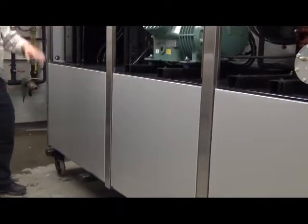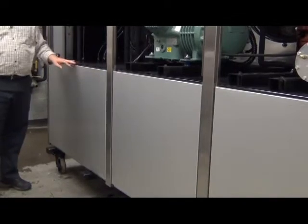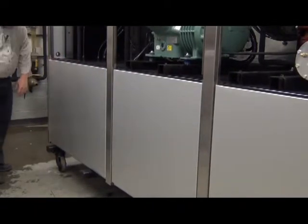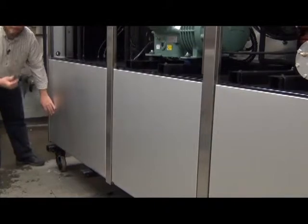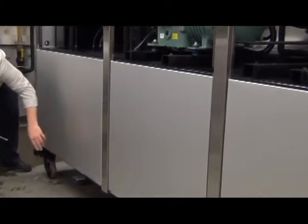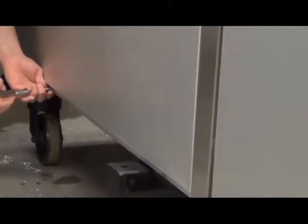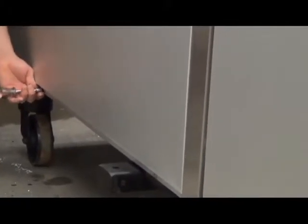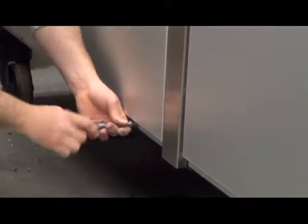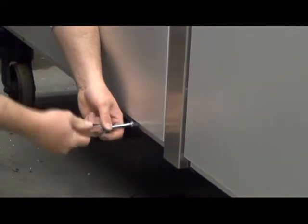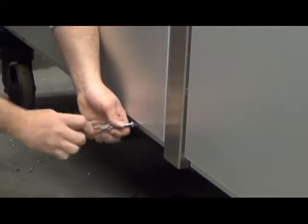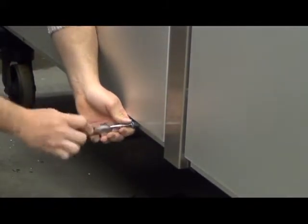Once you have the top panels removed and safely set aside, then you can remove the bottom panels, and you do that by using a 7-16ths nut driver. There are either one or two bolts in each of the bottom panels, and you just unscrew these. Then just take the panel off.